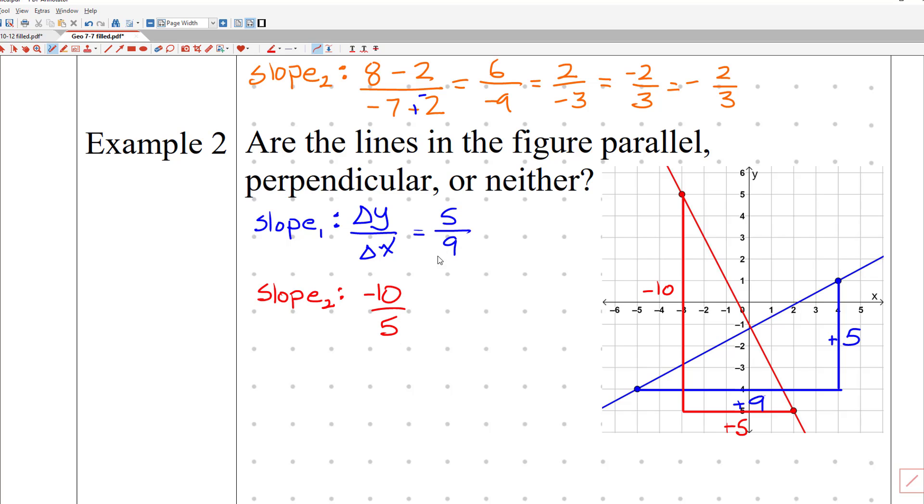And you can see these are really, really close to opposite reciprocals. The value that I was trying to find, if I took the opposite reciprocal of the blue here, I should have been finding something that was negative 9 over 5. I found negative 10 over 5. These are not the same. And therefore, the answer to this question is neither.